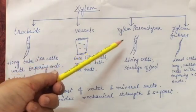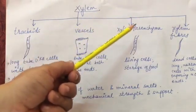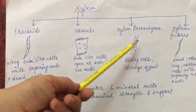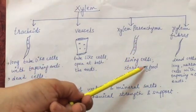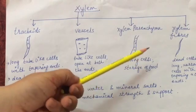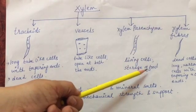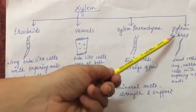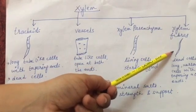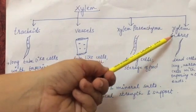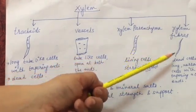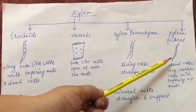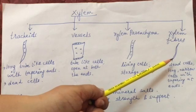Next we talk about the only living cells of xylem: xylem parenchyma. These cells help in the transport of water and also in the storage of food. Next are xylem fibers, which are narrow, long cells with tapering ends. These are dead cells, and they help in providing mechanical strength and support to the plant.